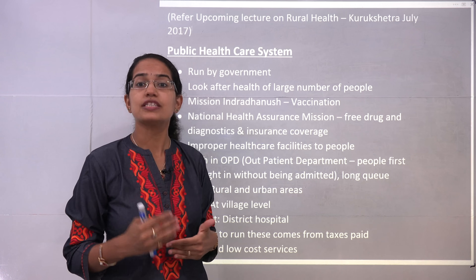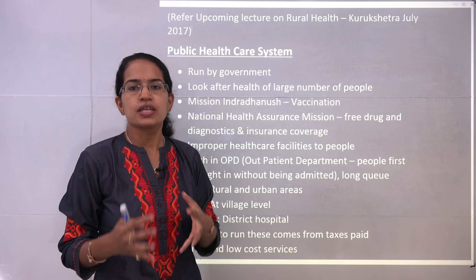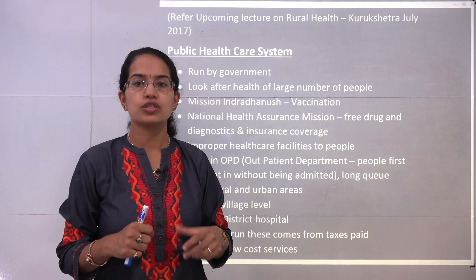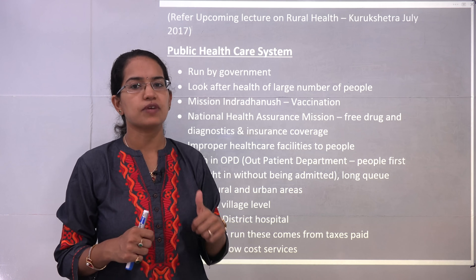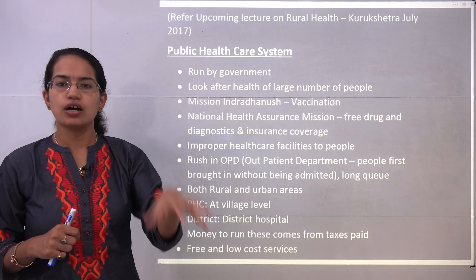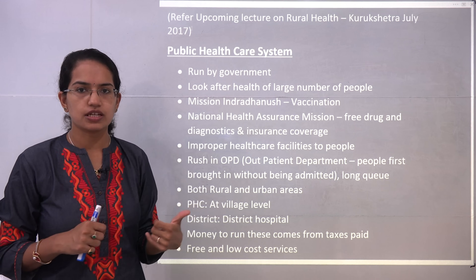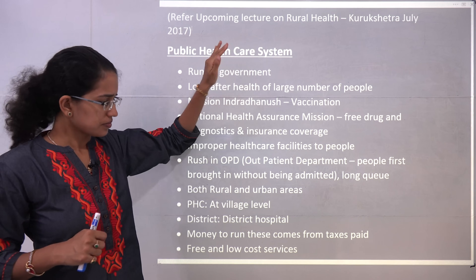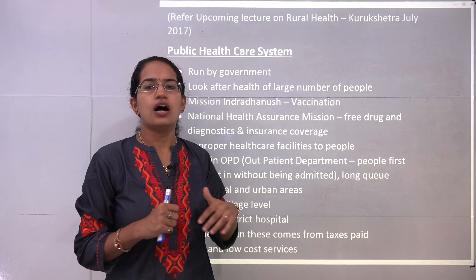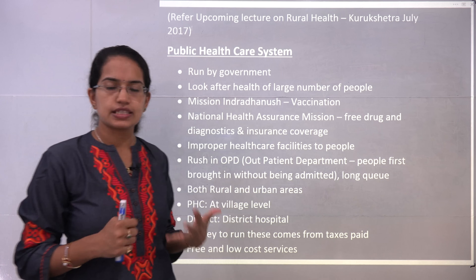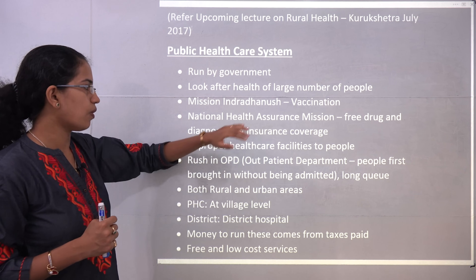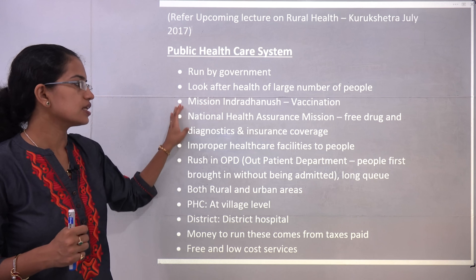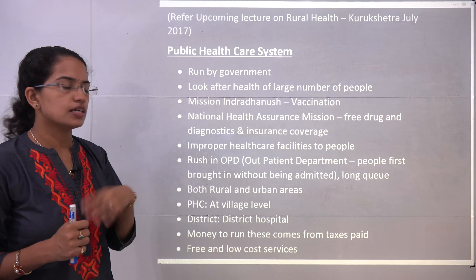Public healthcare is much more affordable because it is cheaper, drawing in more people. However, nowadays there are issues about the quality of services provided under the public healthcare system. The government is keeping an eye on quality. Under Mission Indradhanush, the government talks about providing universal vaccination and immunization programs. The National Health Assurance Mission talks about free drugs, diagnostics, and insurance coverage even for severe ailments.